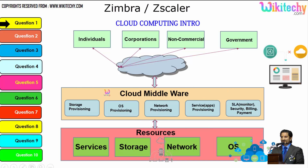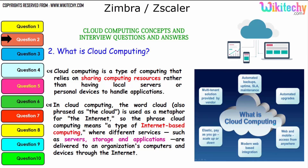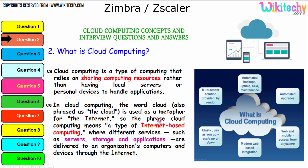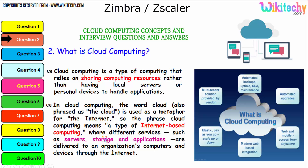The cloud middleware consists of specialized software provided by the cloud service provider to allow end users to access resources. This is how the cloud computing architecture works. The definition: cloud computing is a type of computing that relies on sharing computing resources rather than having local servers or personal devices to handle applications. The word 'cloud' is used as a metaphor for the internet, so cloud computing means internet-based computing where services such as servers, storage, and applications are delivered through the network.